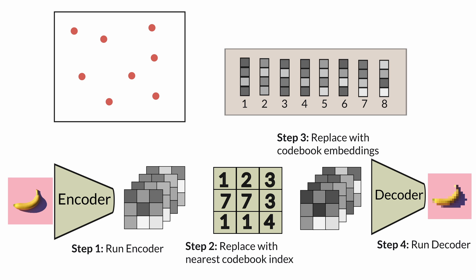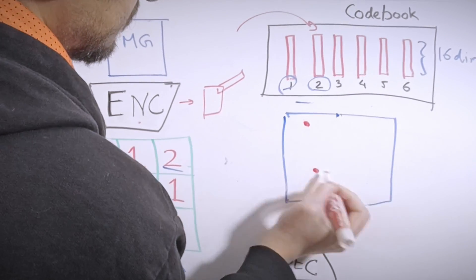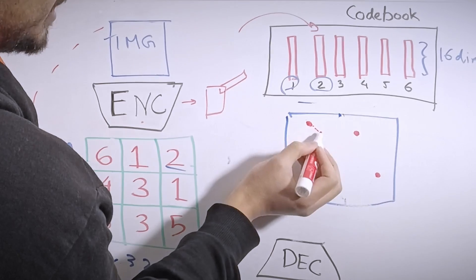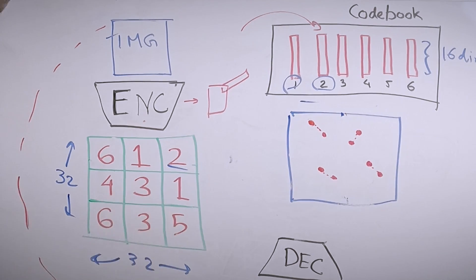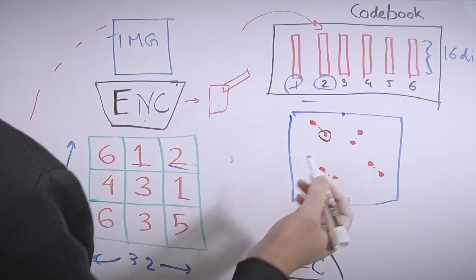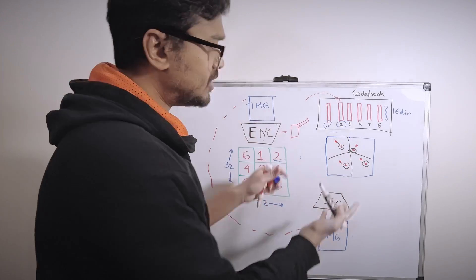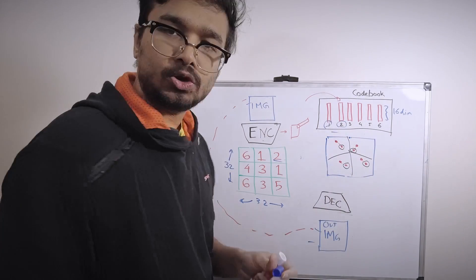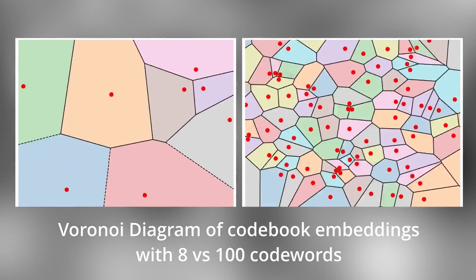The VQVAE clamps the encoder's output to only contain vectors from the codebook — the image vocabulary. As the codewords train, they shift inside the latent space, optimizing themselves to best capture different semantic information in the input dataset. That's why it's called vector quantization: each codeword controls a different portion of the latent space, discretizing it into bins. You can see this behavior in a Voronoi diagram, where codeword embeddings shift during training to control different territories in the embedding space.